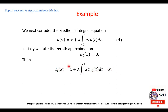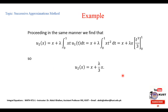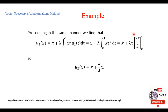For the next approximation, we use u1(t) = t. Proceeding in the same manner, u2(x) = x + λ∫[0 to 1] xt · u1(t) dt = x + λ∫[0 to 1] xt² dt. Taking x outside the integral and integrating t² from 0 to 1 gives t³/3 evaluated from 0 to 1. Simplification leads to u2(x) = x + (λ/3)x. This is the second approximation.